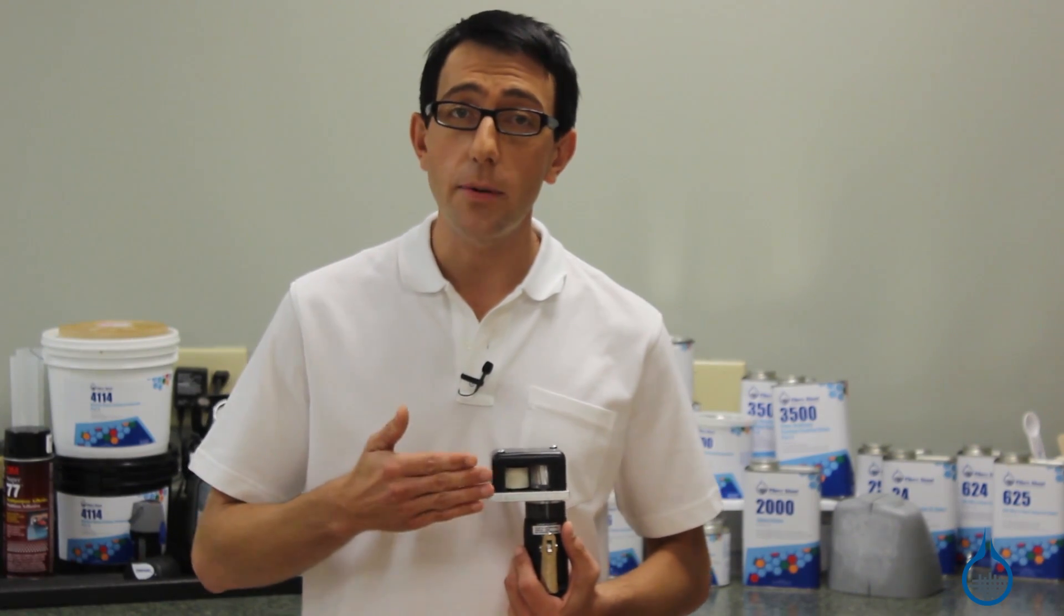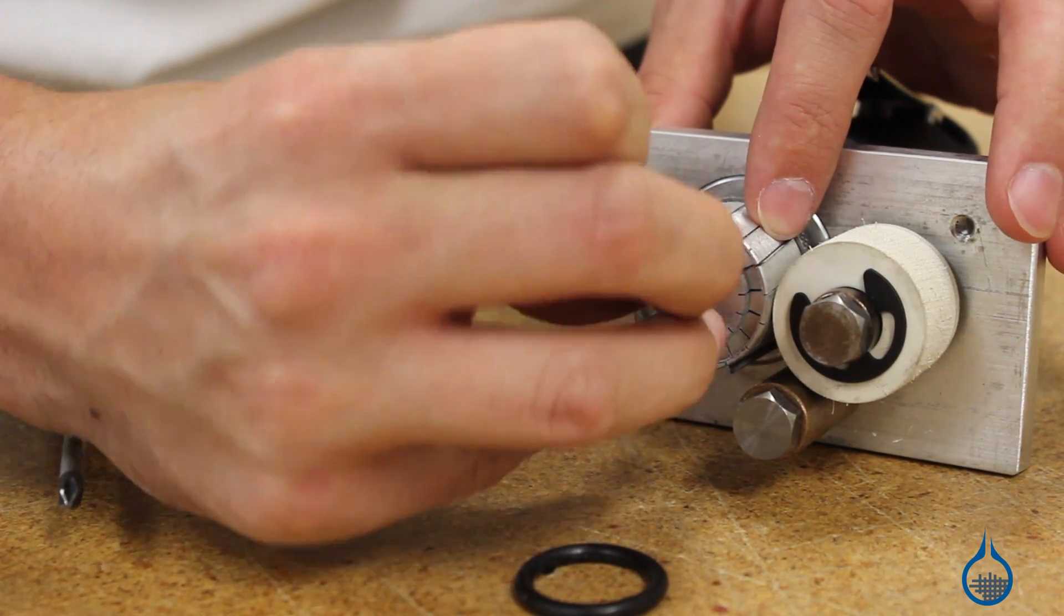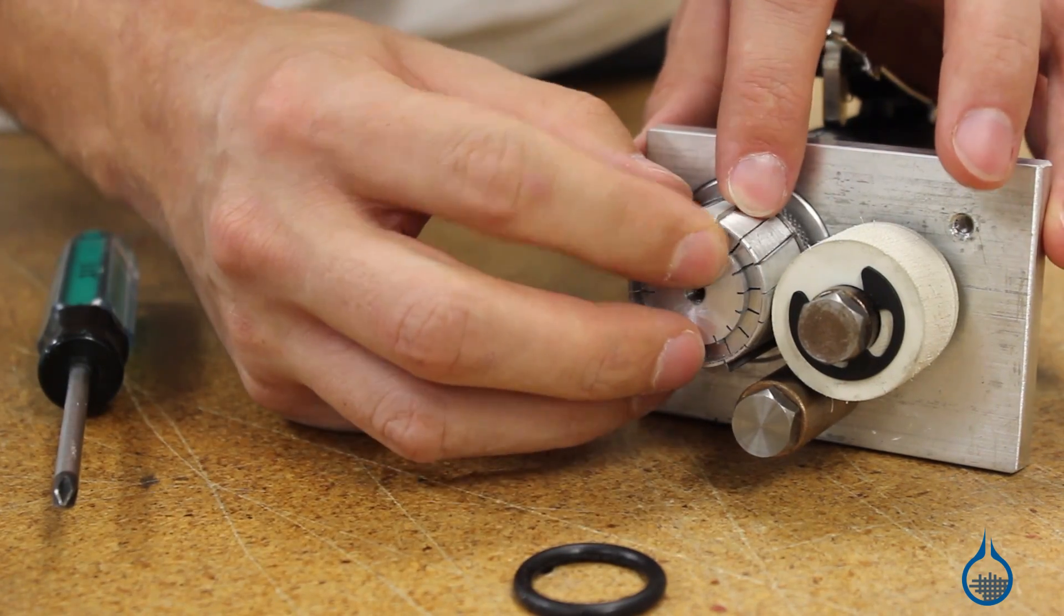By adjusting the number and placement of chopper blades, you can adjust fiber length from as long as 4 inches to as short as 5/16ths of an inch.